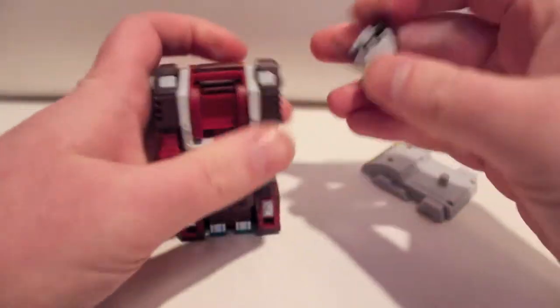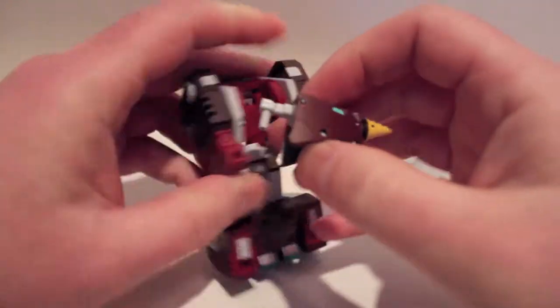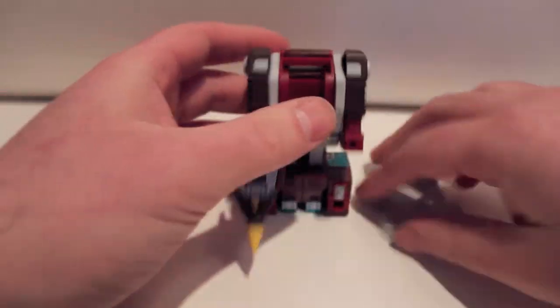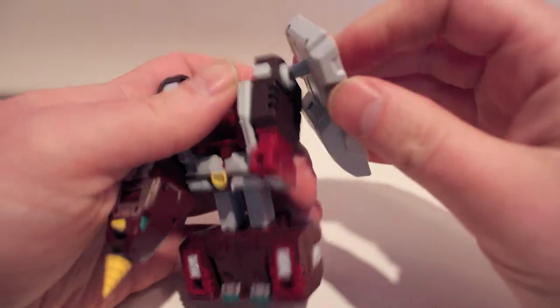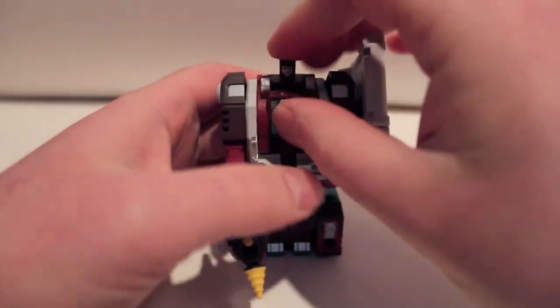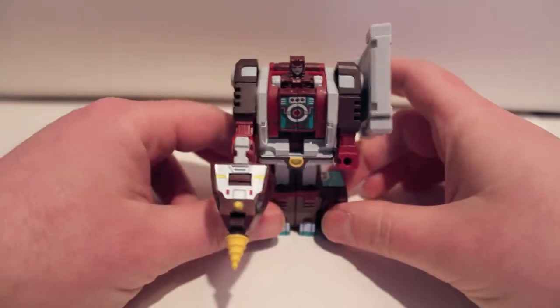The head, pop the head off. This bit folds back, flip out the handle, flip forward the nose cone, plug in the hand. Take the shield, plug it on his arm. Take the dude, plug him in, and there we have Razor Spike in his robot mode.